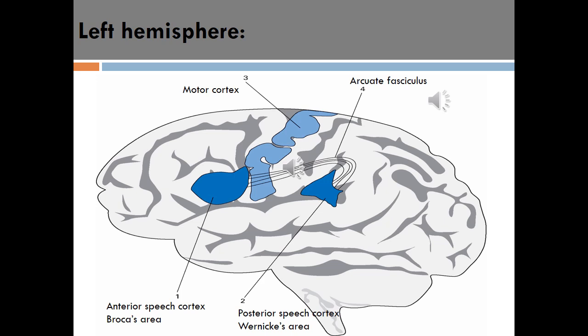In this figure you can see the four main parts that participate in the comprehension and the production of speech. The first one is called Broca's area, the second one is called Wernicke's area, the third one is called the Arcuate Fasciculus, and the fourth one is the Motor Cortex.